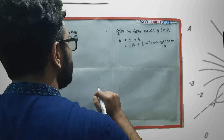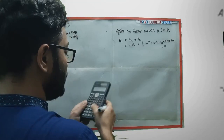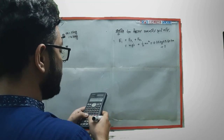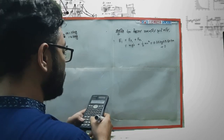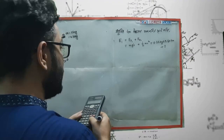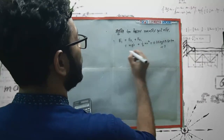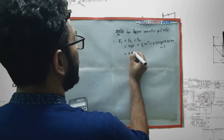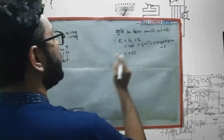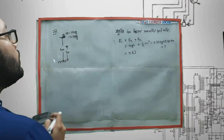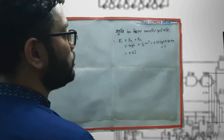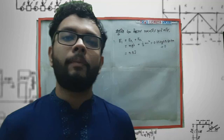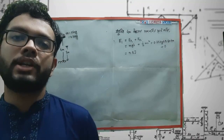Let's see the first thing. 0.25 into 9.8 into 4 — so it's 9.8. Let's see the first thing. If we look at this, when we look at 4 meters, it was 9.8 J.